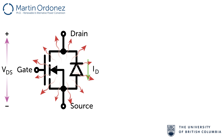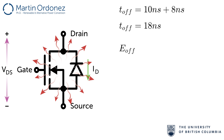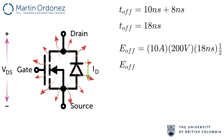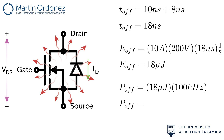Turn-off losses can be determined in the same way. The transition time is 10 ns plus 8 ns for a total of 18 ns. The energy is 10 amps times 200 volts times 18 ns divided by 2, giving 18 microjoules dissipated each time the switch is turned off. Turn-off power losses are calculated by multiplying the turn-off energy by 100 kHz, which gives 1.8 watts of turn-off losses.